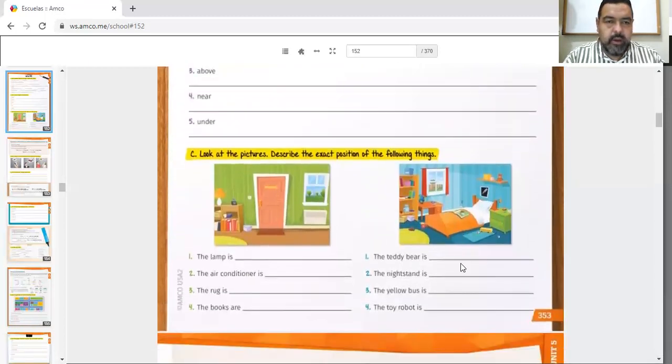Now, the last one right here is look at the pictures. Describe the exact position of the following things. This is easy. The lamp is, I would say, on the table. And you have to continue with that.